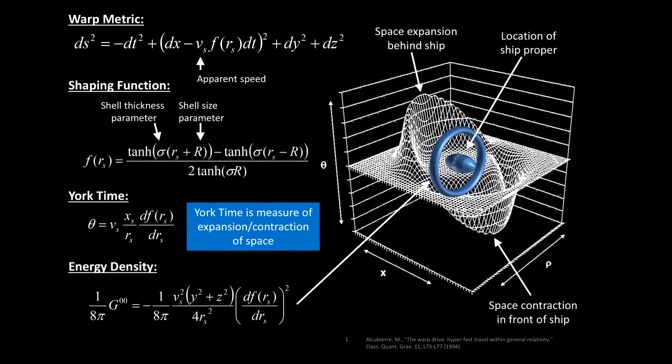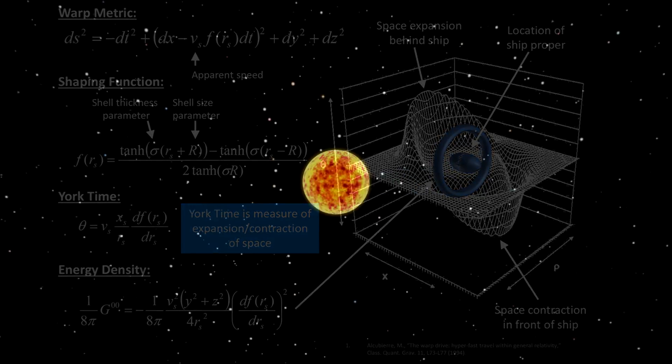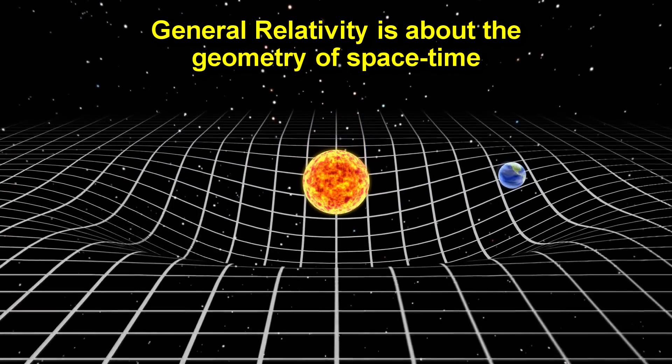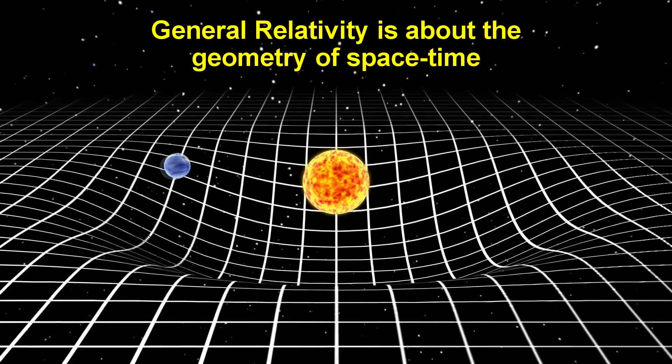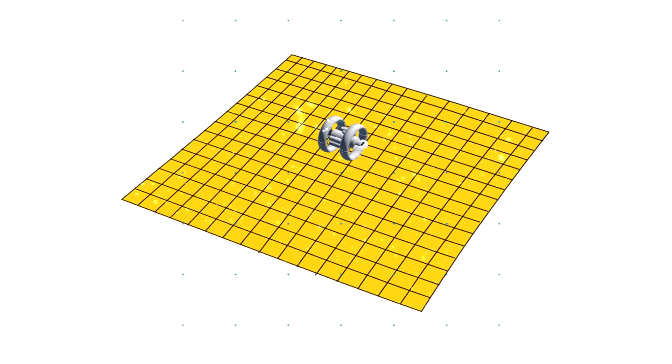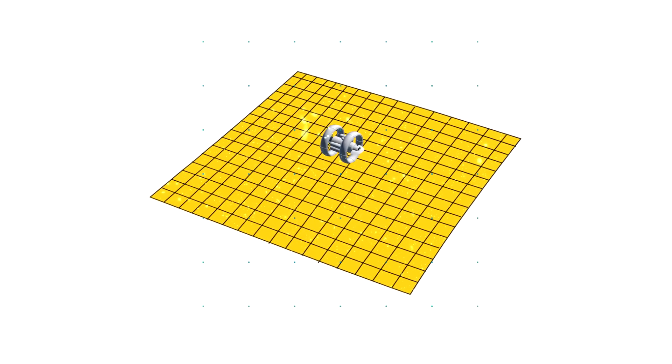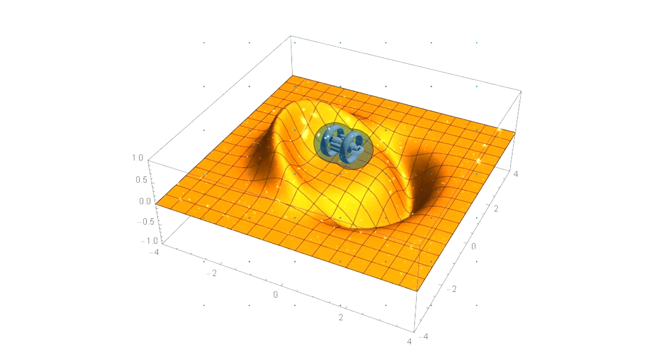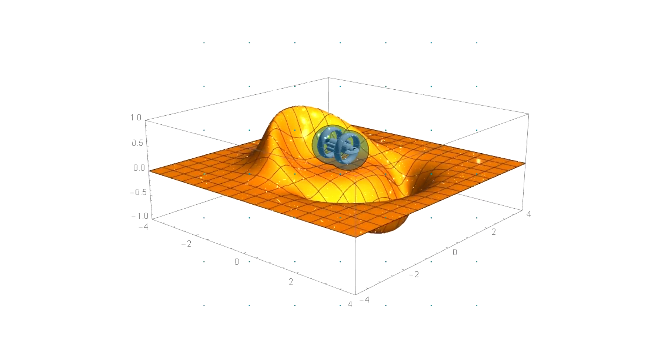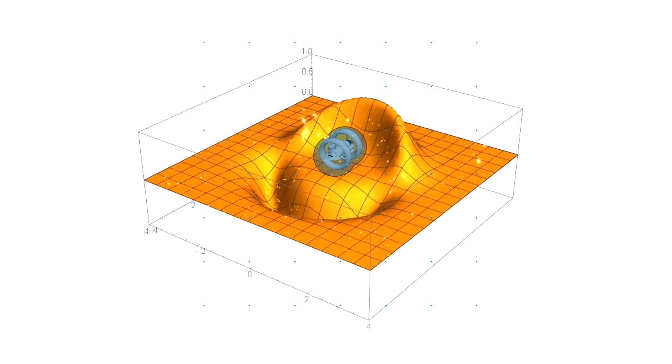This was a purely geometric manipulation. What you have to understand is that general relativity at its core is about the geometry of space-time. Einstein showed that gravity is a geometric warping of space-time. By manipulating this geometry to look the way a warp field would look for a spaceship, Alcubierre made the equations find an answer to the idea of a warp drive, regardless of whether it was feasible or whether other laws of physics would allow it.